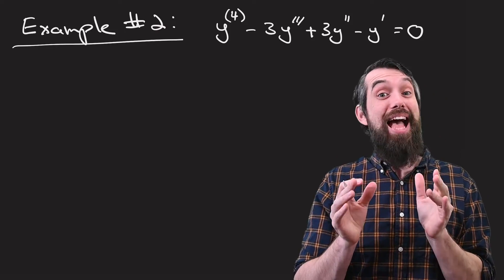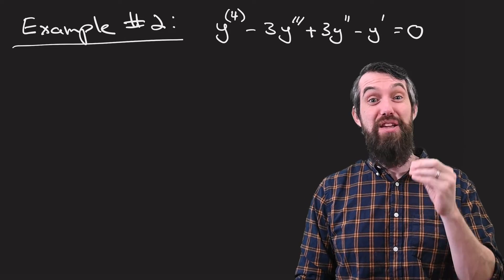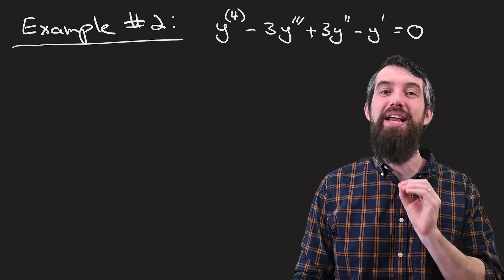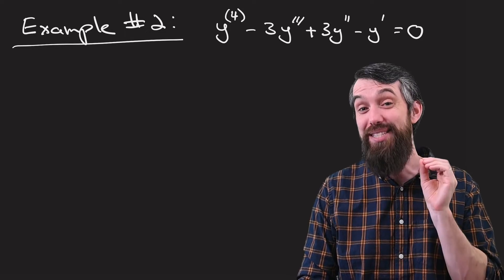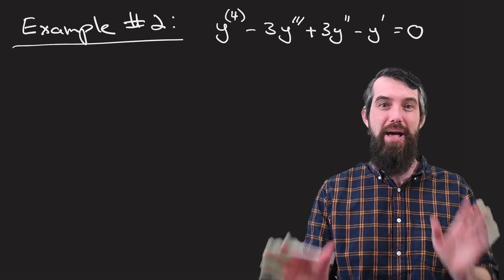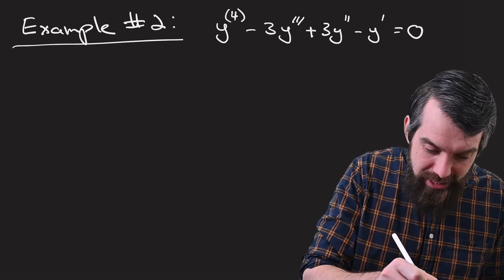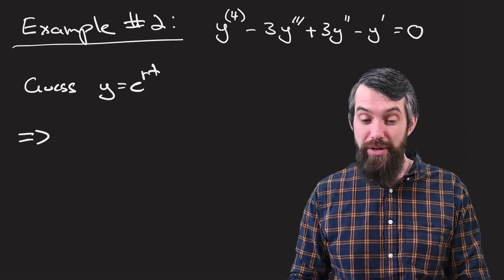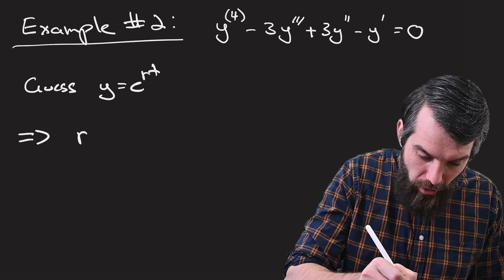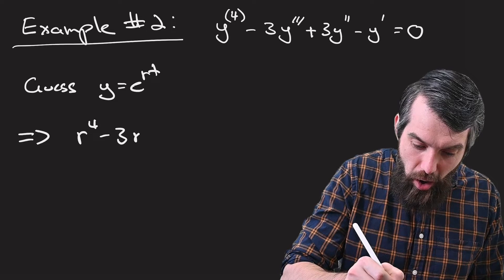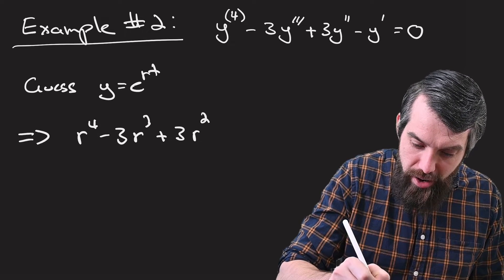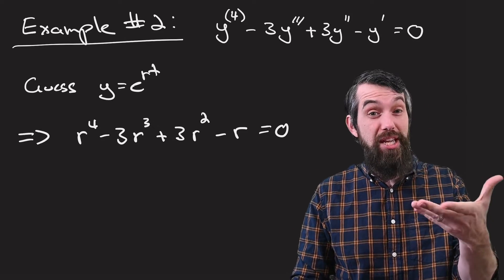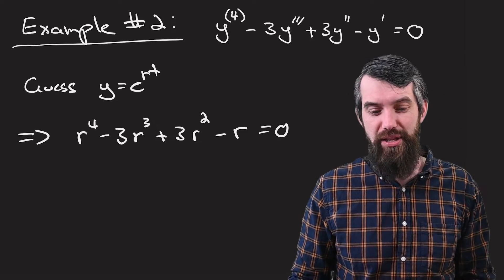The second example is actually a fourth order constant coefficient equation. It's the fourth derivative of y, when you put it in brackets you mean 4 derivatives, minus 3 times the third derivative plus 3 times the second derivative minus y prime, all equals 0. We'll come up with our guess, as we always do for constant coefficients, y equals e to the rt. This gives us our characteristic equation: four derivatives gives r to the fourth minus 3r cubed plus 3r squared minus r equals 0. All of these terms would be multiplied by e to the rt, but I just cancel it. That's my characteristic equation.